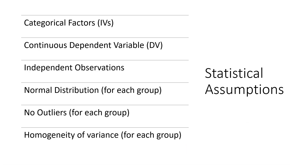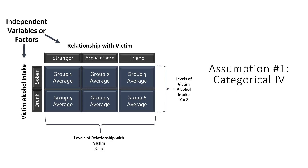Before running a two-way ANOVA, we have to make sure our data are appropriate for this analysis. We need to meet six assumptions — the same ones we've looked at with the independent samples t-test and one-way ANOVA. Our first assumption is that our independent variables are categorical, measured at the nominal level. Both factors — level of alcohol intake and relationship status — are categorical and meet this assumption.